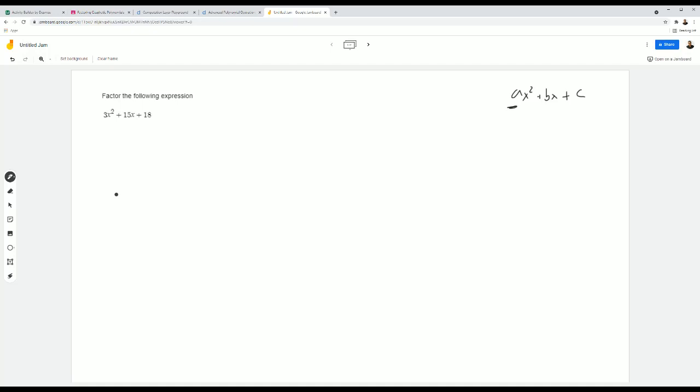This expression, we can do something to all of the terms here because they all have something in common. If you look at all three of these terms, we have 3x squared, we have 15x, and we have 18.